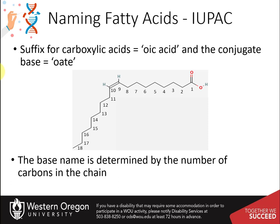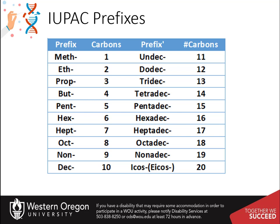The base name is determined from the number of carbons present and is further modified if double bonds are present. The prefixes used for carbon length are the same as those learned in organic chemistry. The prefix 'icos' is used for a 20-carbon chain, though you may still see it spelled with the older 'eicos' spelling — I will accept either as correct. The prefix 'docosa' is used for a 22-carbon chain.